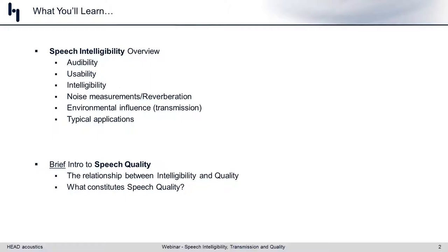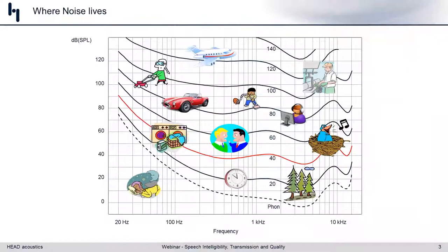The first thing I want to share is a quick picture of where noise lives, because when we talk about intelligibility we rarely talk about an ideal acoustic scenario with no background noise. There will always be some level of background noise involved when measuring for intelligibility, and as you are aware, we are constantly surrounded by different types of machinery or natural occurrences that generate noise.